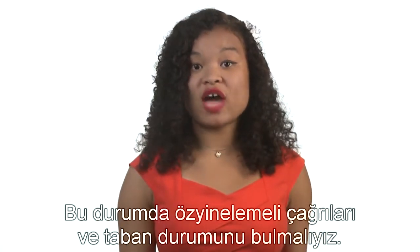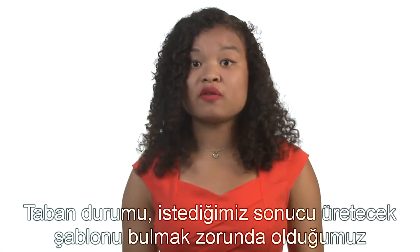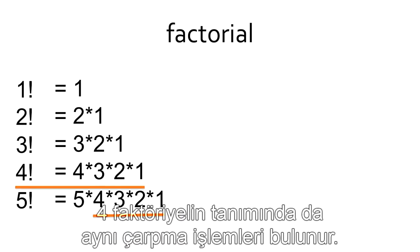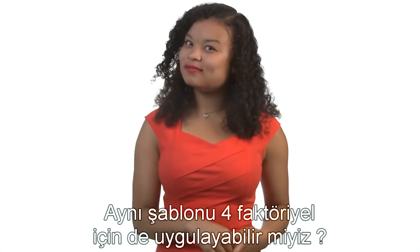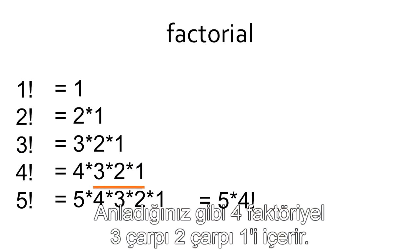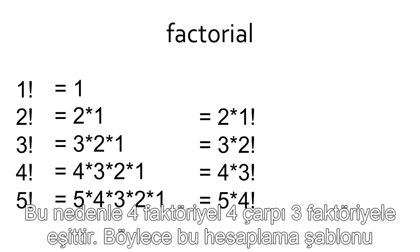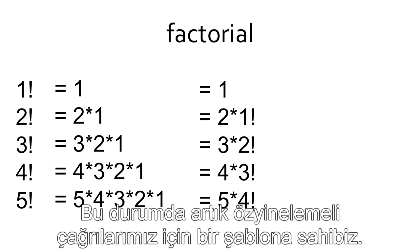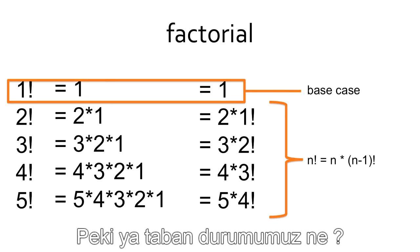So how might we write a recursive function that calculates the factorial of a number? We'll need to identify both the base case and the recursive call. The recursive call will be the same for all cases except the base case, so we need to find a pattern. See how 5 factorial involves multiplying 4 by 3 by 2 by 1 — that same multiplication is the definition of 4 factorial. So 5 factorial is just 5 times 4 factorial. The same applies to 4 factorial: 4 factorial equals 4 times 3 factorial, and so on. The pattern is n factorial equals n times the factorial of n minus 1. Our base case is that 1 factorial equals 1.